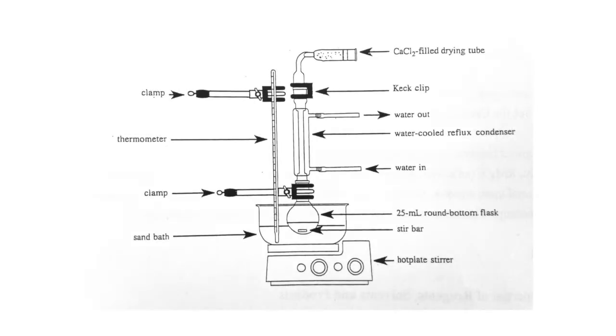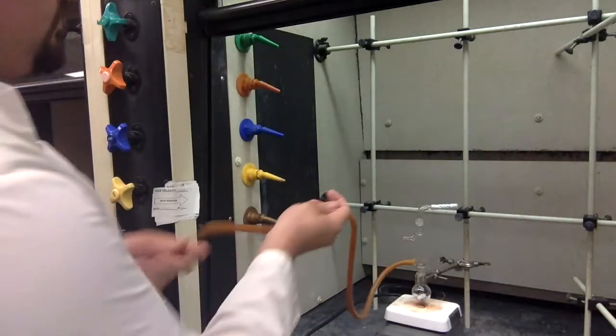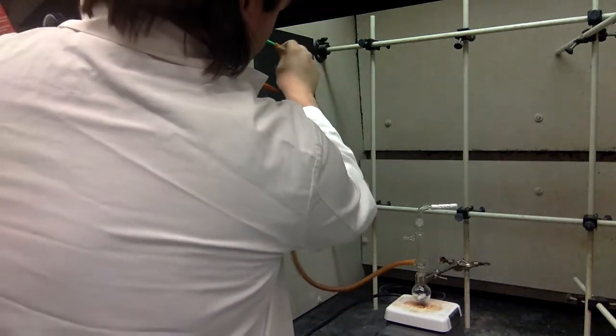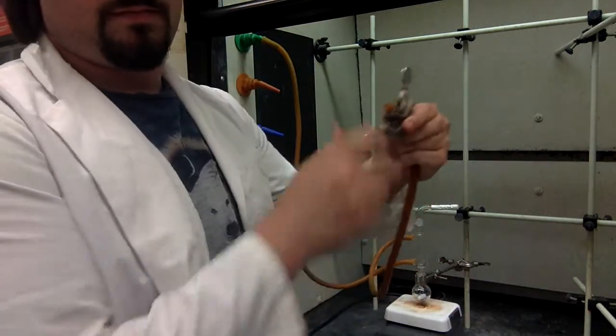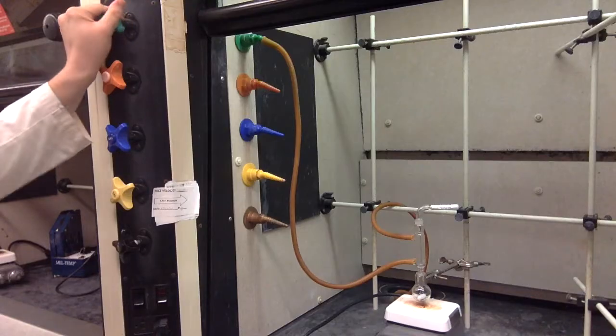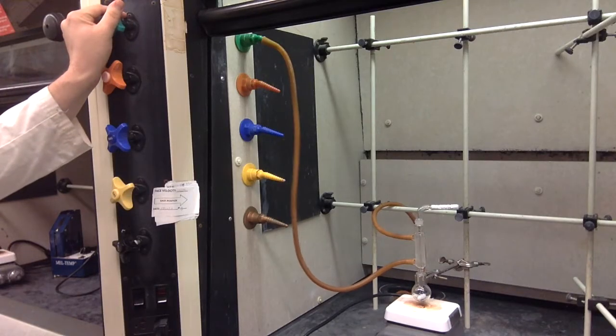When you're ready to assemble your apparatus, grab your round bottom with your magnesium and stir bar out of the white desiccator. Then come over and assemble it as shown. Make sure for the water-cooled reflux condenser, the water is coming in from the bottom and out from the top. I like to use the clamp as a way to hold the tube in the sink. Just make sure you don't clamp it all the way shut. Next, test your system and make sure it's not spraying water all over the place. This looks good.